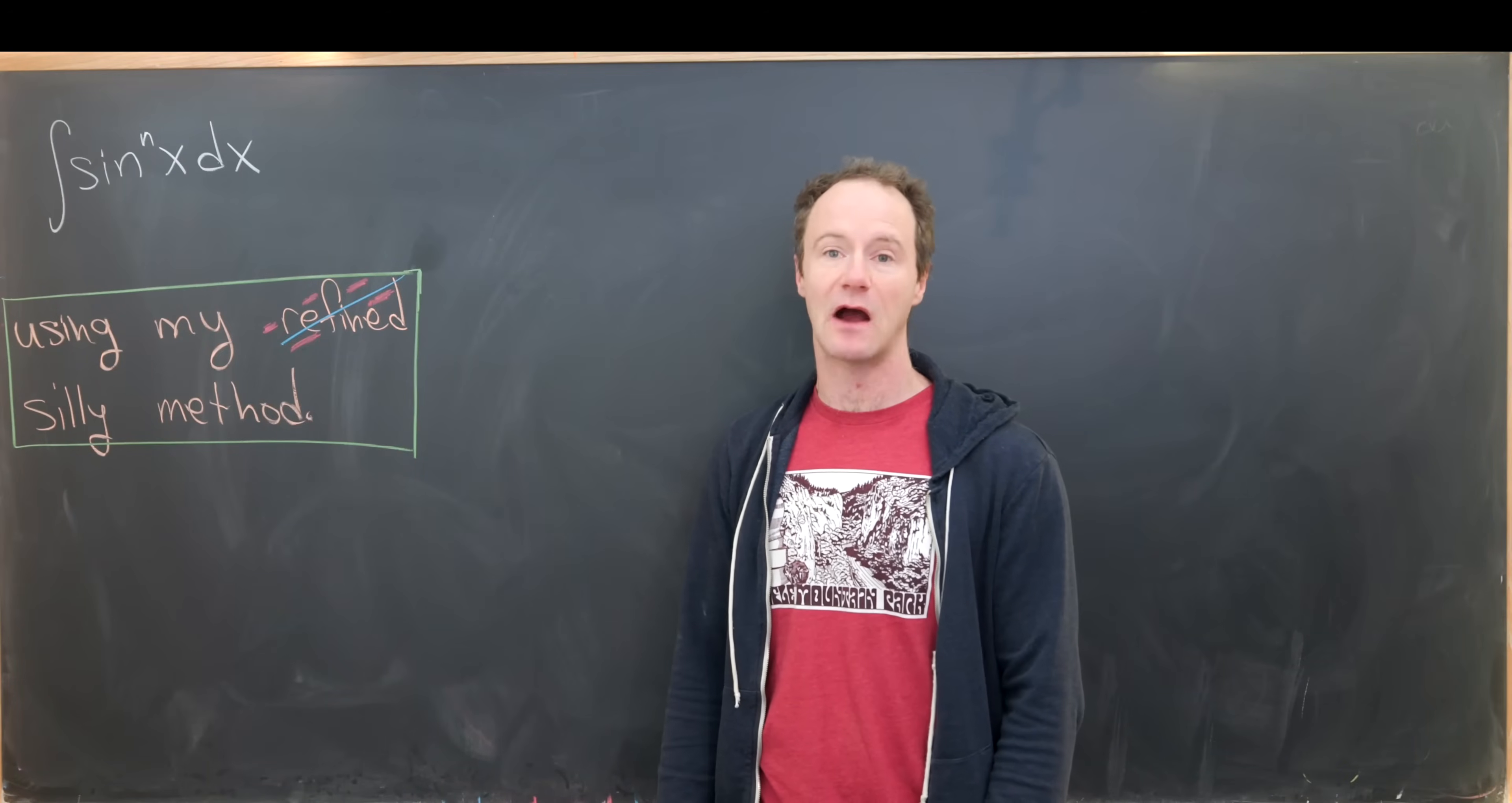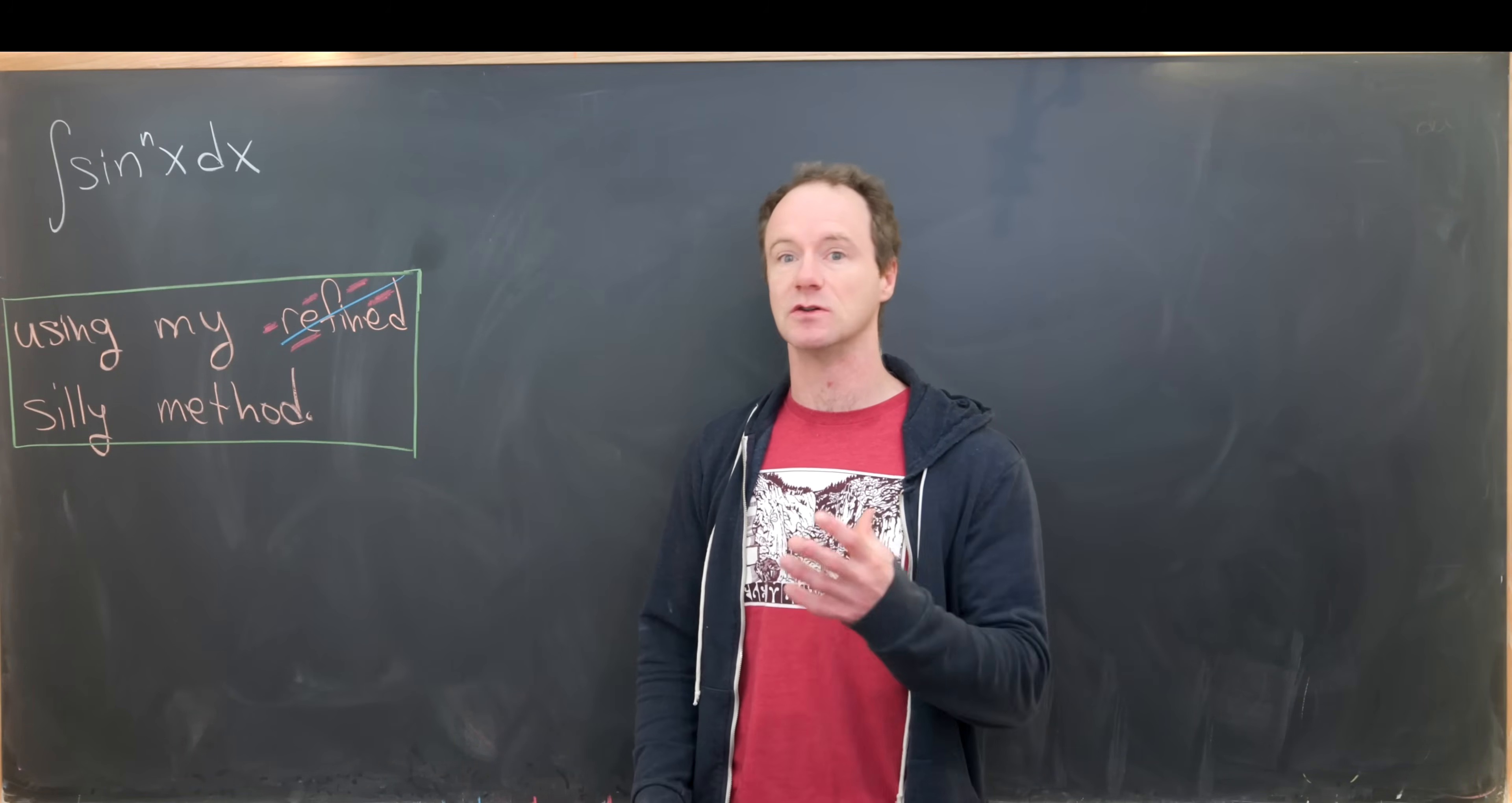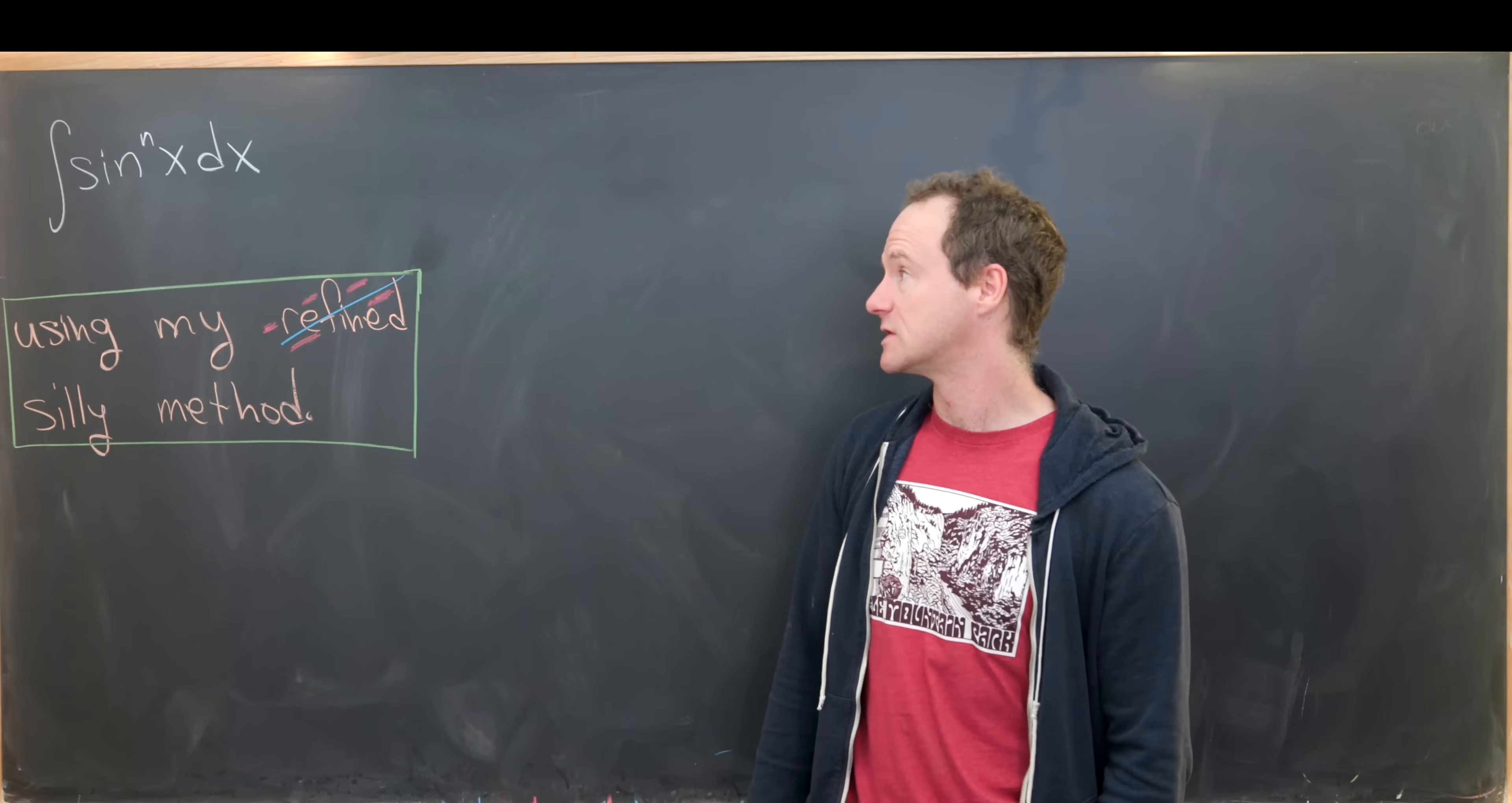Here we're going to derive a standard power reducing formula for the integral of sine to the n. We're going to use the standard strategy of integration by parts, but this will be refined a little bit so that we have just a single equation. Maybe it's not super refined, maybe it's just a silly method. Post in the comments if you think this is better, worse, or the same in terms of aesthetics as the standard way of proving this result.